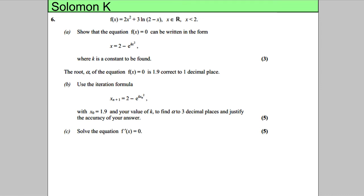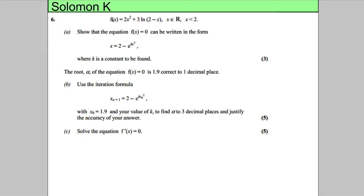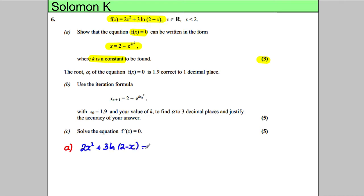This question: we've got a function f(x) and we're told that f(x) is equal to 2x squared add 3 multiplied by the natural logarithm of 2 subtract x. Show that f(x) = 0 can be written in a given form, for 3 marks, where k is a constant to be found. So what we're solving is 2x² + 3·ln(2 − x) = 0.